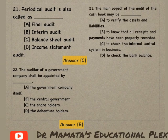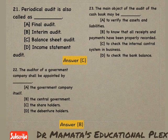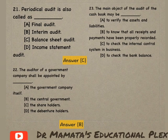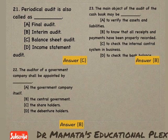Next: The main object of the audit of the cash book may be — to verify assets and liabilities, to know that all receipts and payments have been properly recorded, to check the internal control system, or to check the bank balance? Cash book ka audit karte hain toh uske peeche ek main object kya hota hai? Hume pata karna hota hai ki sare receipts and payments properly record huye hain ya nahi. So option B is the correct answer.